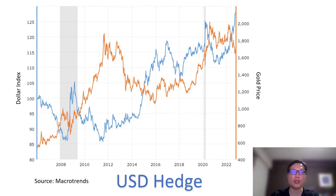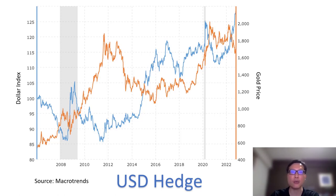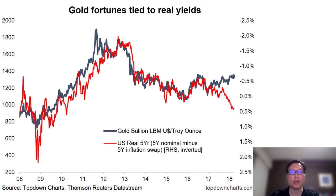There is another element that also influences the strength of the dollar, and that is the relative interest rates between the US and the rest of the world. So when US interest rates are significantly higher than those of other major countries, the dollar would strengthen because foreign money would be attracted by the higher US interest rates and flow to the US. And because of the strong dollar, gold would be negatively impacted. Gold is not an interest-bearing asset — it doesn't pay dividends like a stock and it doesn't pay coupons like a bond. Hence, there is an opportunity cost to holding gold compared to other assets that actually generate yield.